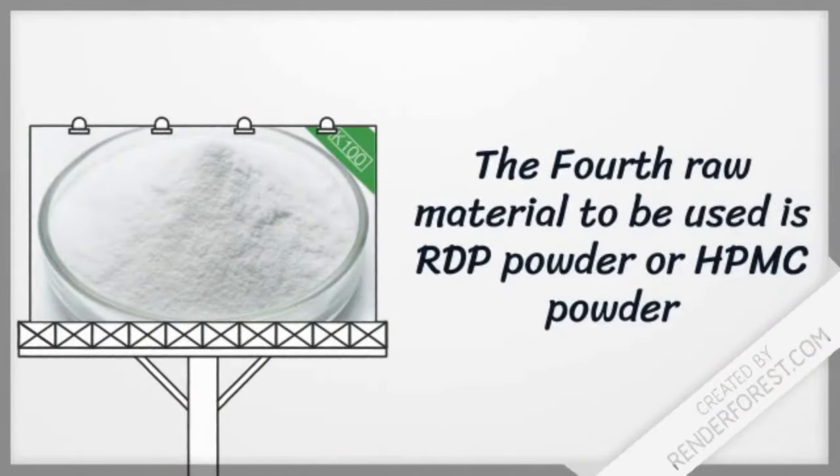The fourth raw material to be used is RDP powder, redispersable powder, or HPMC powder, hydroxypropyl methyl cellulose.